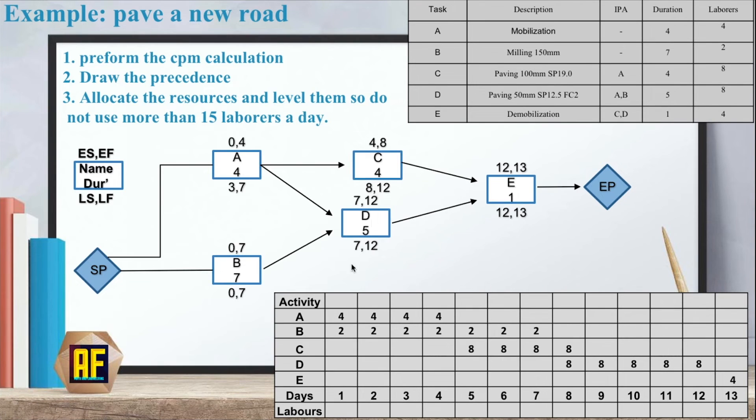And now what we do is very simple. We take our columns and add each column to the labor section. And we can say that in the first day we have six labors from activity A and B. Second day six labors. Third day six labors. Fourth day six labors. And on the fifth day we have ten labors. Six day ten labors. Seven day ten labors. And on the eighth day we have sixteen. Eight plus eight sixteen. And if you remember we need to allocate the resources so we do not use more than fifteen labors a day. So here we have a problem.